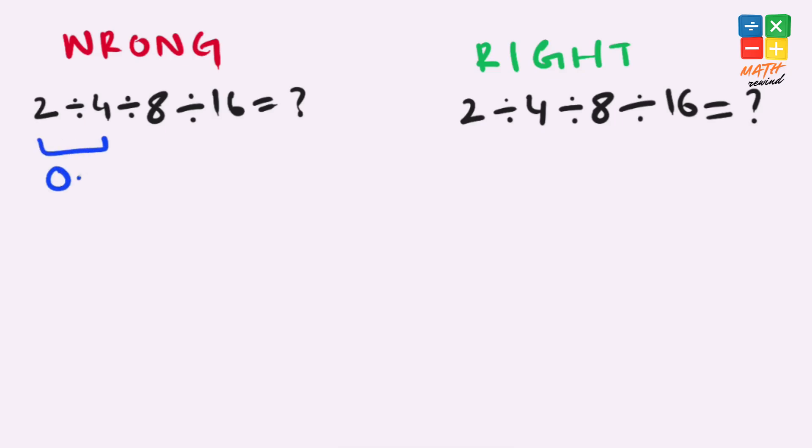2 divided by 4 gives us 0.5 and 8 divided by 16 also equals 0.5. 0.5 divided by 0.5 equals 1, but this answer is not correct because according to the order of operations we must solve parentheses, then exponents, then multiplication and division, and finally addition and subtraction.